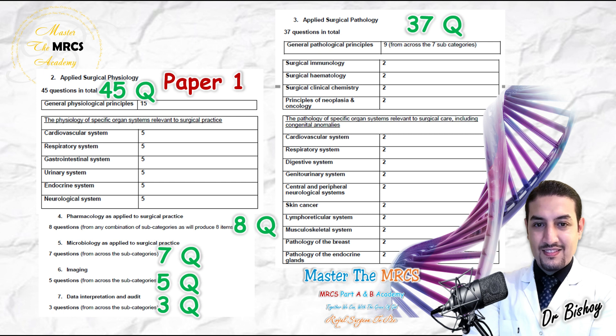The 45 physiology questions are organized into chapters, just like anatomy: cardiovascular, respiratory, gastrointestinal, urinary, endocrine, and neurological systems — six chapters in total. Each chapter has approximately five questions. Notably, within each chapter there are fixed question types. For example, the cardiovascular system will include about three ECG questions out of the five — targeting normal ECG interpretation, asking about waves, and covering regular recurring question types, not tricky ones.